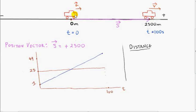In the last video, we considered two scenarios for a car travelling a distance of 2500 meters in 100 seconds. In the first scenario, the car travelled with a constant velocity of 25 meters per second, so its velocity-time graph is a horizontal line. In the second scenario, the car's initial speed at t equals 0 is 1 meter per second, and its speed increased uniformly to a final speed of 49 meters per second.